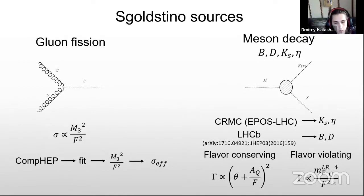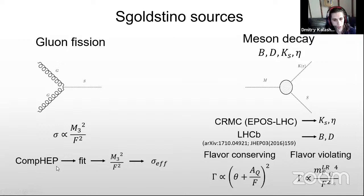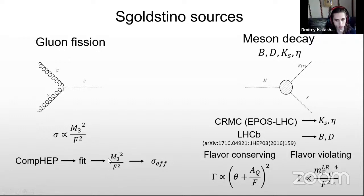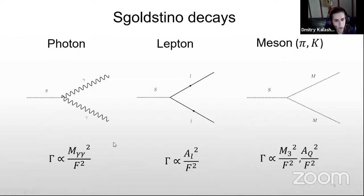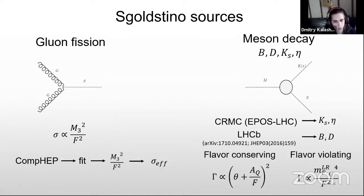The first sgoldstino source is proton-proton scattering governed by gluon fusion. This vertex is described by the gluino mass. In our work, I calculated this scattering using the CalcHEP package. I calculated the cross-section at different mass points, then extrapolated to the region of lower mass. Because I needed to change the soft parameters, I recalculated with specific values of these parameters to get the effective cross-section.